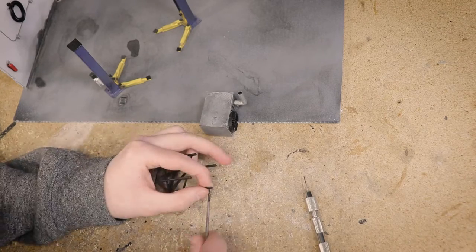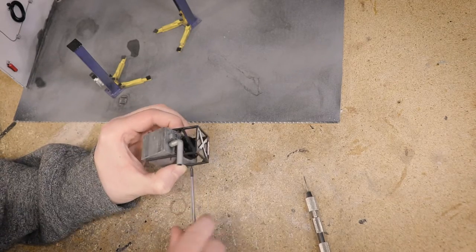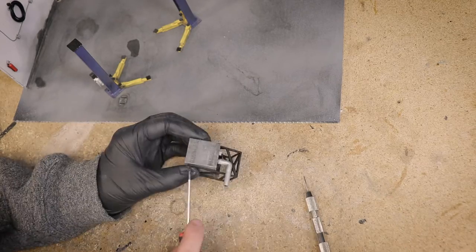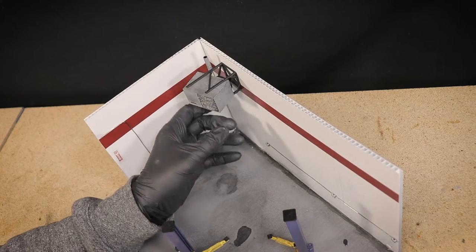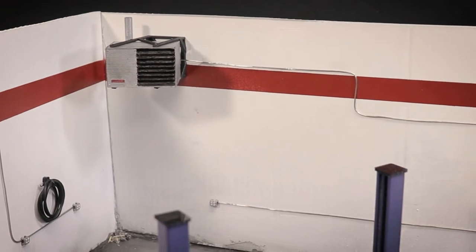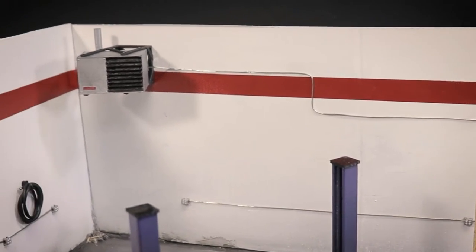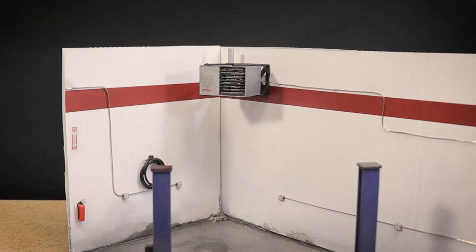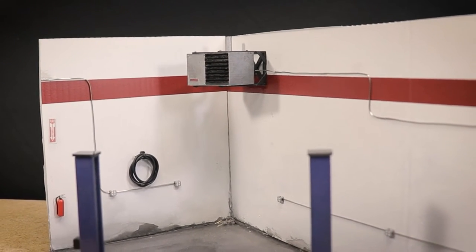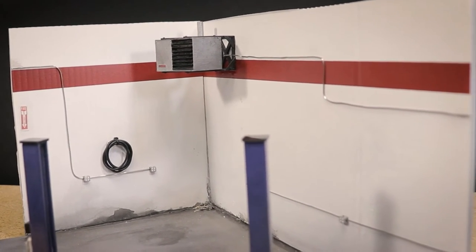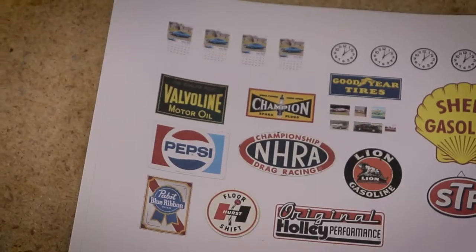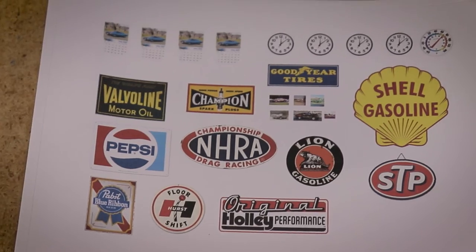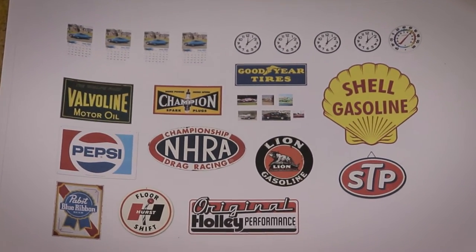The outlets weren't the only thing I wanted to add to the walls however. I next glued the heater into place and ran some conduit into the back of that as well. So far so good. Now I have a bunch of signs that I want to add to the walls as well.